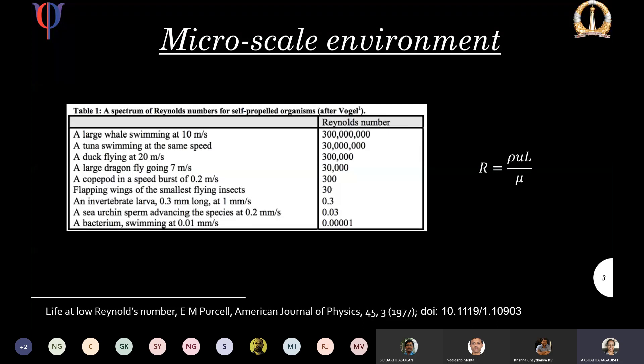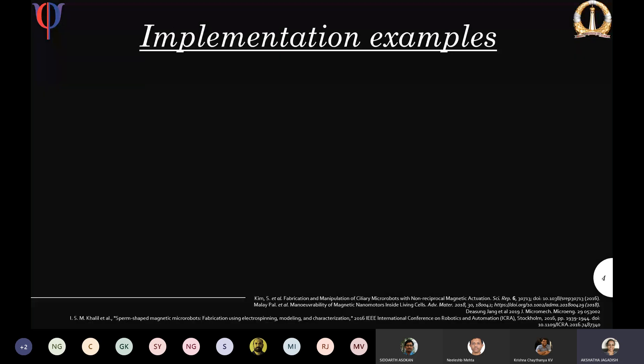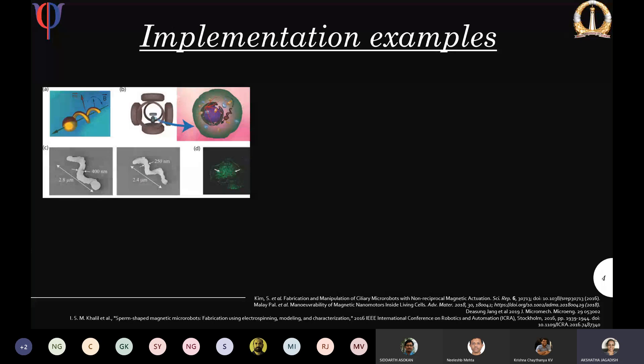Here we can look at some examples from the literature. This is a rigid flagellar-shaped microbot controlled with a Helmholtz coil, a sperm-shaped micro robot, a paramecium-inspired micro robot which has cilia, chemically powered Janus particles, bacteria enhanced with magnetic particles and controlled with a similar coil, and some other robots with different types of flagella.